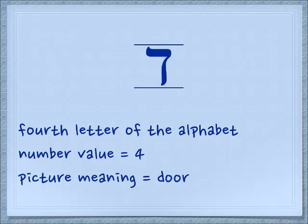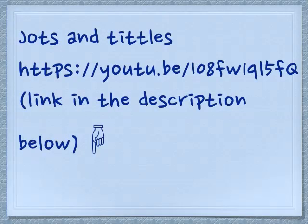The fourth letter of the alphabet is the Dalet. The Dalet has basically two strokes: the stroke that goes across the top and then the one that comes down. It's characteristic of the Dalet that it pushes back a little bit to the right. It is a full-size letter, and the picture meaning is the door. These two letters express an important principle — the principle of jots and tittles — which is in a different video. You can click the link in the description box to learn about jots and tittles, which relate to Yud and Dalet.